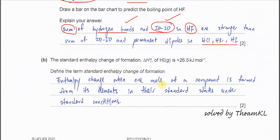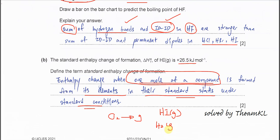Part B. The enthalpy change of formation delta HF of HI is positive 26.5. Define the term enthalpy change of formation. Enthalpy change when one mole of compound is formed from its elements, and these elements must be in their standard state under standard conditions. For example, under standard conditions means 25 degrees C, 1 atm. Oxygen is gas, hydrogen is gas. These are all the standard states.